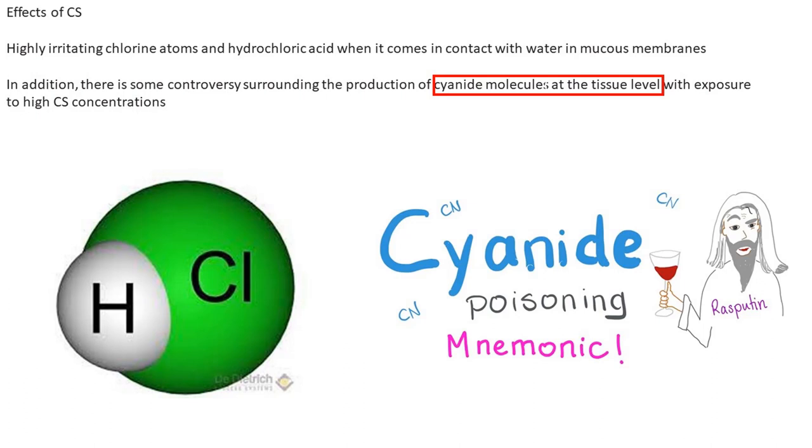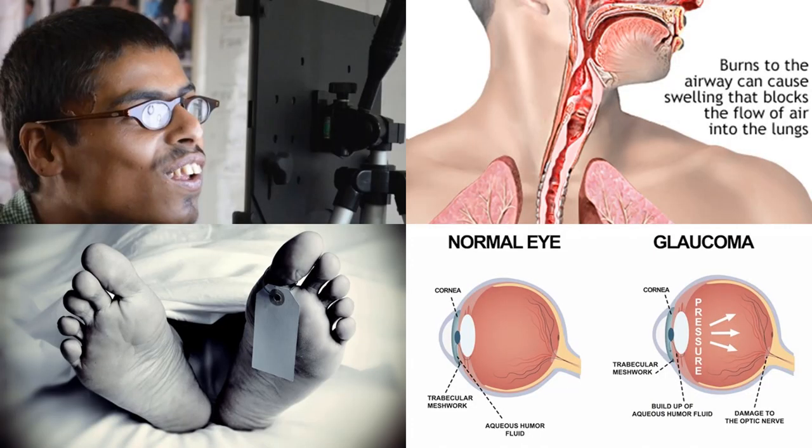There is a controversial argument in science about whether tear gas particles can produce cyanide at the tissue level. Considering long-term effects, you can see glaucoma, complete blindness, damage to the respiratory system, and ultimately death.